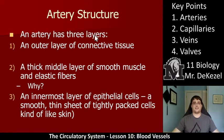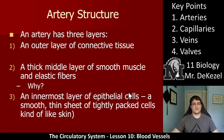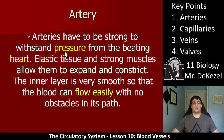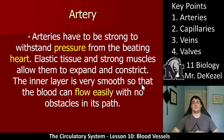An artery has three layers. It has an outer layer so that it's connected to everything around it. It has a really thick middle layer of muscle fibers that are very elastic so they can stretch. And it has a very smooth innermost layer of epithelial cells — kind of like skin cells — flat, smooth, and tightly packed so that blood can move past freely with no friction. Arteries have to be strong to withstand pressure from the beating heart, and elastic tissue and strong muscles allow them to expand and contract depending on the situation. The inner layer is very smooth so blood can flow easily with no obstacles.